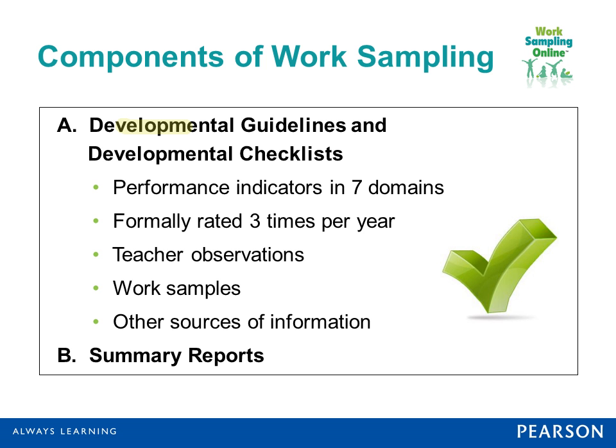Work Sampling is used for children starting at three years old — a preschool three-year-old version — up to grade three. So P3, P4, kindergarten, grades one, two, and three. There will be a set of developmental guidelines describing developmental expectations for children at the end of a three-year preschool program, a four-year-old preschool program, and so on.